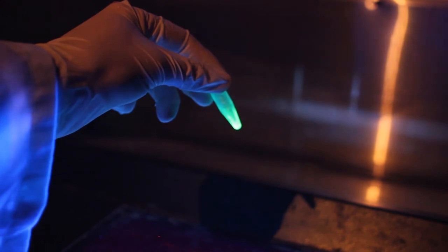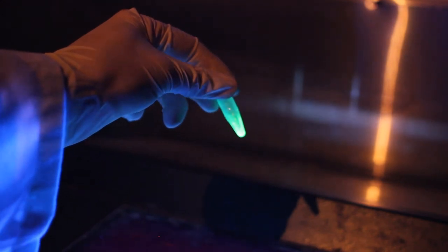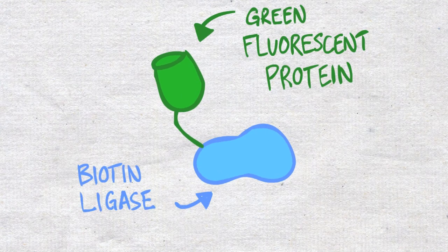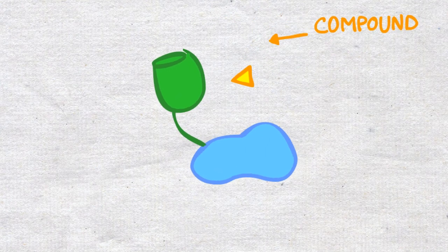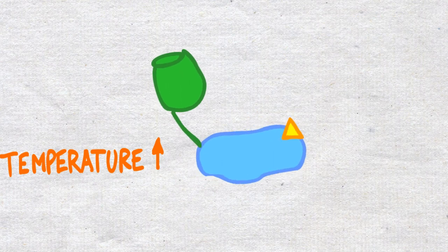Green fluorescent protein, as the name would suggest, fluoresces under UV light. In our case, we attach green fluorescent protein to biotin ligase, add a compound, then slowly raise the temperature while recording the fluorescence.